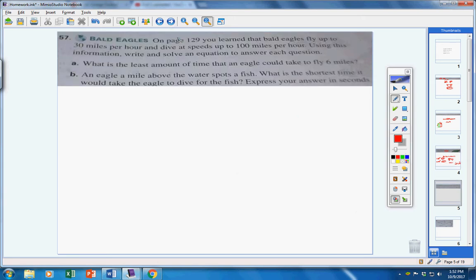Moving on to number 57. An eagle flies up to 30 miles an hour. In times, that speeds up to 100 miles per hour. Use this information, write, and solve an equation to help us answer these questions. Question number A is, what is the least amount of time that an eagle could take to fly six miles? If I want the least amount of time, that means I want the fastest speed. And the fastest speed when it's flying is 30 miles an hour.